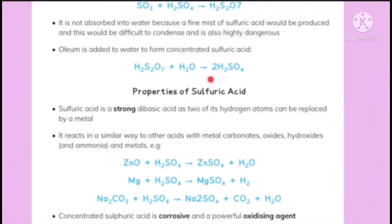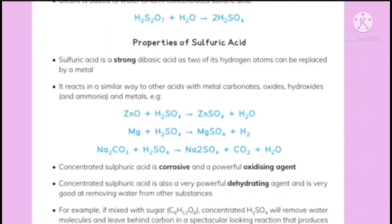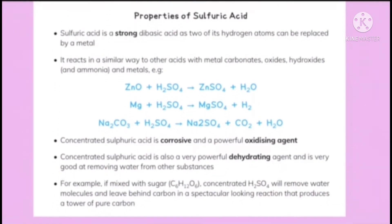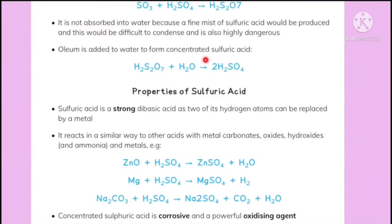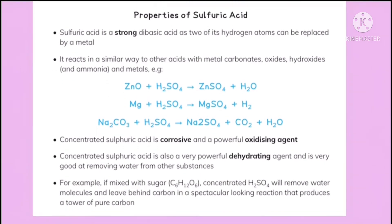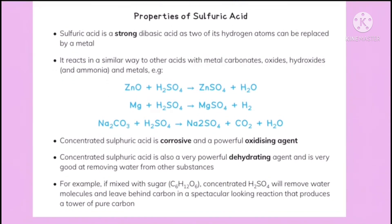What are the properties of sulfuric acid? It is a strong dibasic acid. A dibasic acid is an acid which has two hydrogen atoms that can be replaced by a metal.